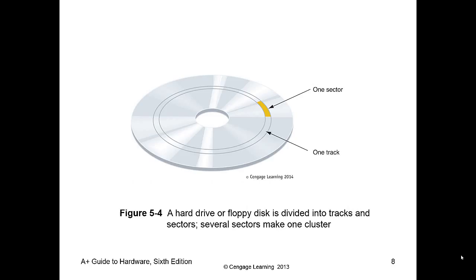The tracks are going to be different sizes depending on where they're located, because they all hold 4096 bytes. As you get closer to the center, your pizza slice gets narrower, so the actual track has to be a little bit thicker. On the outer edge, the track is a little bit thinner because you have more room as the slice gets wider.